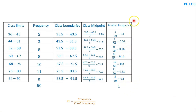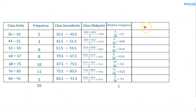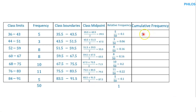Now let's find cumulative frequency. Let's create a new column named cumulative frequency. The word 'cumulative' means summing up from one point to another. For the first class, the cumulative frequency is the same as the frequency of that class, which is 5.